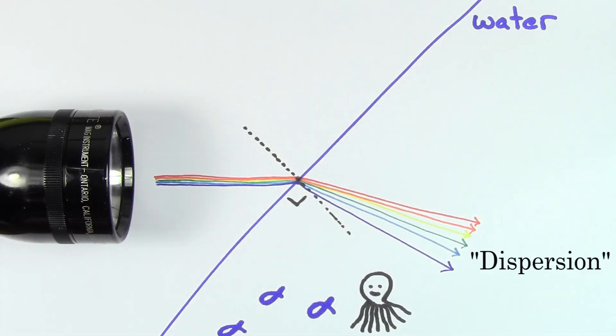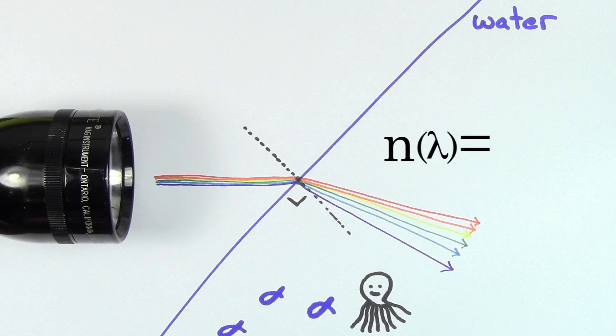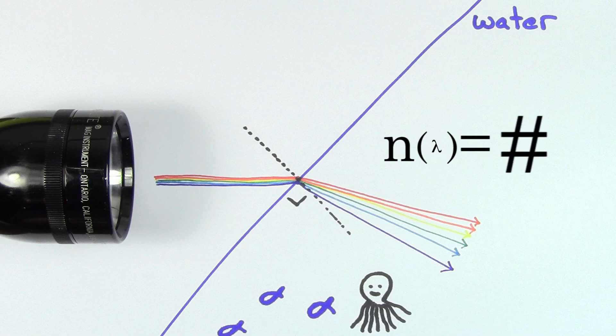So remember, dispersion and the rainbow patterns that emerge result from the fact that most materials have an index of refraction that's a function of the wavelength of the light. And in most materials, the smaller the wavelength, the more the light will bend.